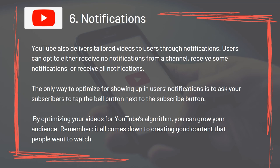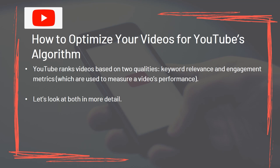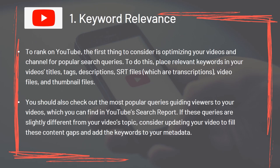By optimizing your videos for YouTube's algorithm, you can grow your audience. Remember, it all comes down to creating good content that people want to watch. YouTube ranks videos based on two qualities – Keyword Relevance and Engagement Metrics. To rank on YouTube, optimize your videos and channel for popular search queries by placing relevant keywords in your video's titles, tags, descriptions, SRT files (transcriptions), video files, and thumbnail files. You should also check out the most popular queries guiding viewers to your videos, which you can find in YouTube's search report.